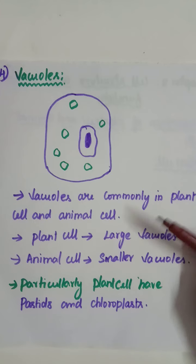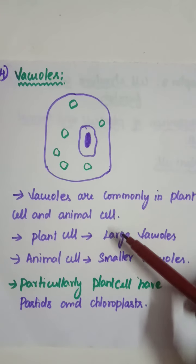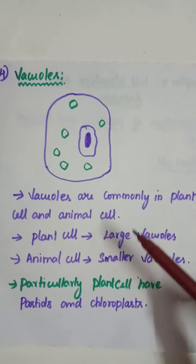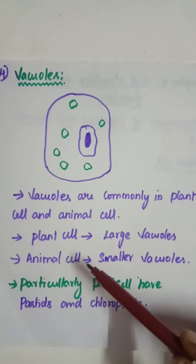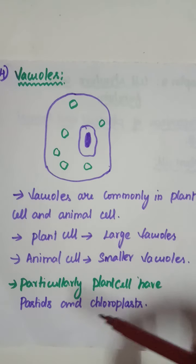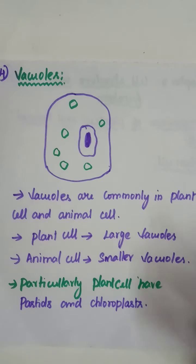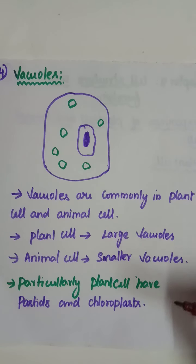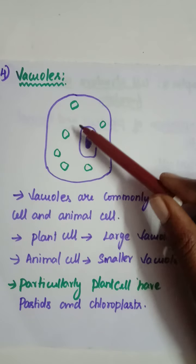Vacuoles are commonly found in both plant cells and animal cells. Plant cells have a large number of vacuoles present in the cytoplasm. Animal cells have smaller, minute vacuoles. Plant cells additionally contain plastids and chloroplasts. These plastids and chloroplasts are important organelles in plant cells and are not present in animal cells.